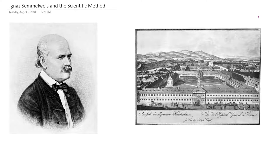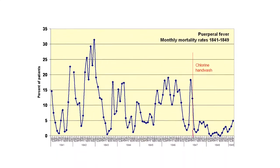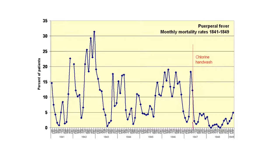He instituted a policy of hand-washing, requiring them to wash their hands in chlorine water. The data is shown here, and you can see this red line is where he instituted the hand-washing policy, and the mortality rate dropped significantly during that time.